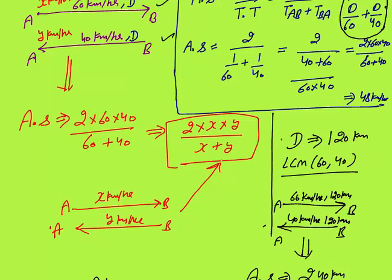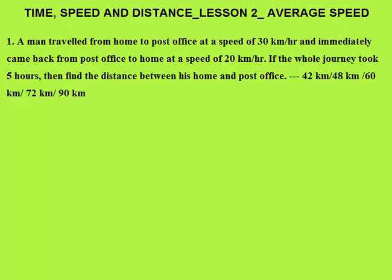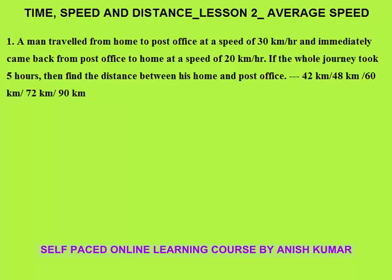So the general formula is 2xy / (x + y), and you can solve this type of question either with that formula or by assuming a convenient distance. Now, Question 1: A man traveled from home to post office at 30 km/h and immediately returned at 20 km/h. The whole journey took 5 hours. What is the distance between home and post office?